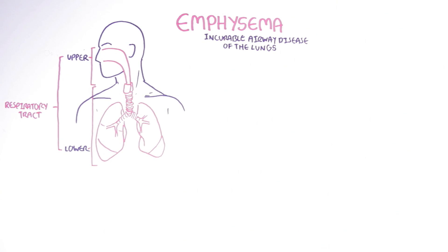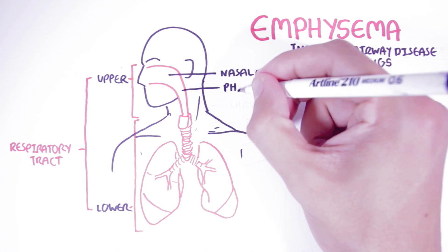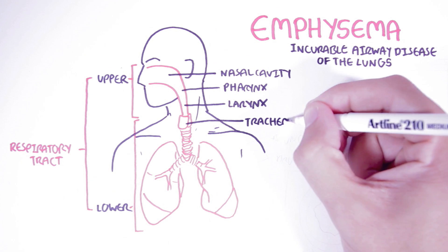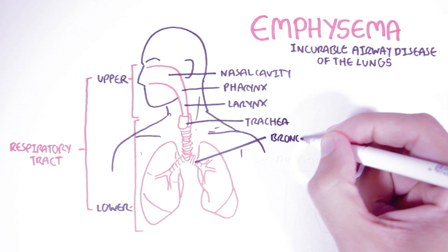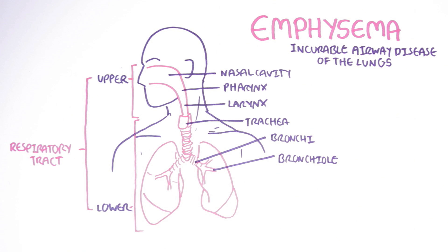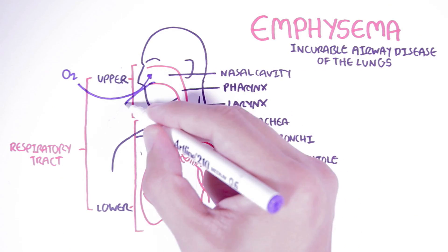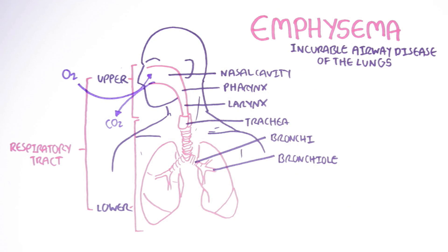The upper respiratory tract includes the mouth, nasal cavity, pharynx, and larynx. The lower respiratory tract includes the trachea, which branches out to the bronchi and then to the bronchioles, and finally to the alveoli, where gas exchange takes place. Oxygen travels through this pathway to the alveoli and CO2 is exhaled from the nose.